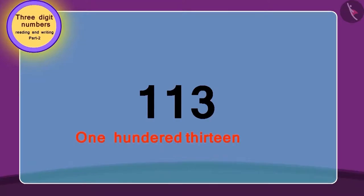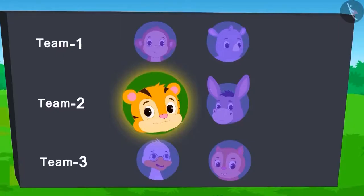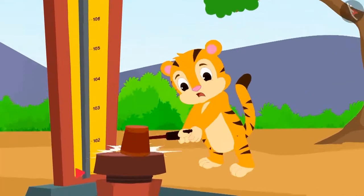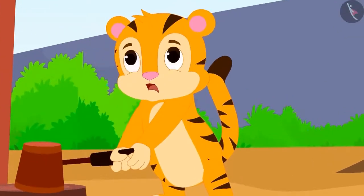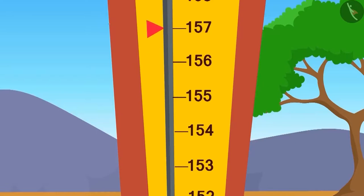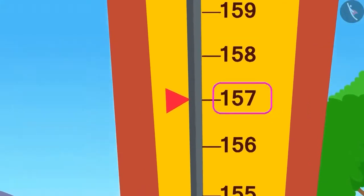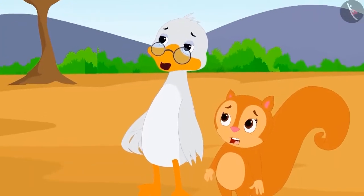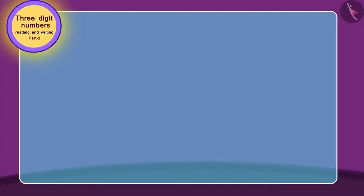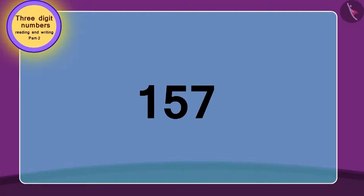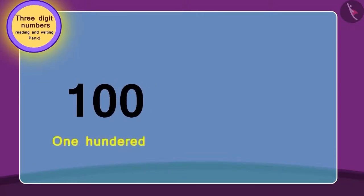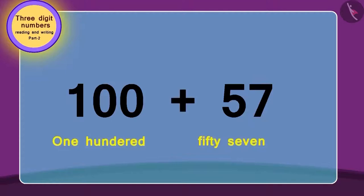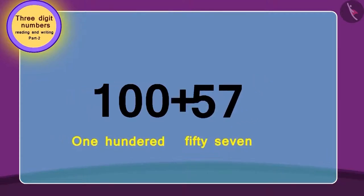Shere Khan from team 2 is now showing his strength in the game. The flag reached above Gagu's mark — the number was 57 points above 100. Chanda and Badbola uncle have started to sweat. We will use the process we just learnt. In this way, we can read this number: 157.